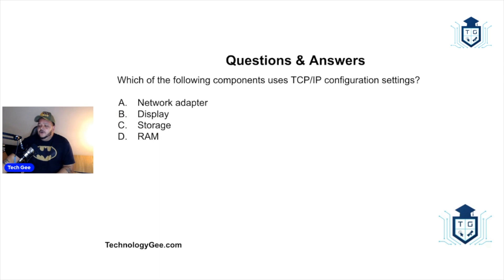Which of the following components uses TCP/IP configuration settings: network adapter, display, storage, or RAM? TCP/IP stands for Transmission Control Protocol Internet Protocol - basically this is how you communicate over the internet. The correct answer is a network adapter or NIC card. This is what allows you to get access to the internet, to move your ones and zeros to the wire and for your ones and zeros from the internet to come back into your computer.